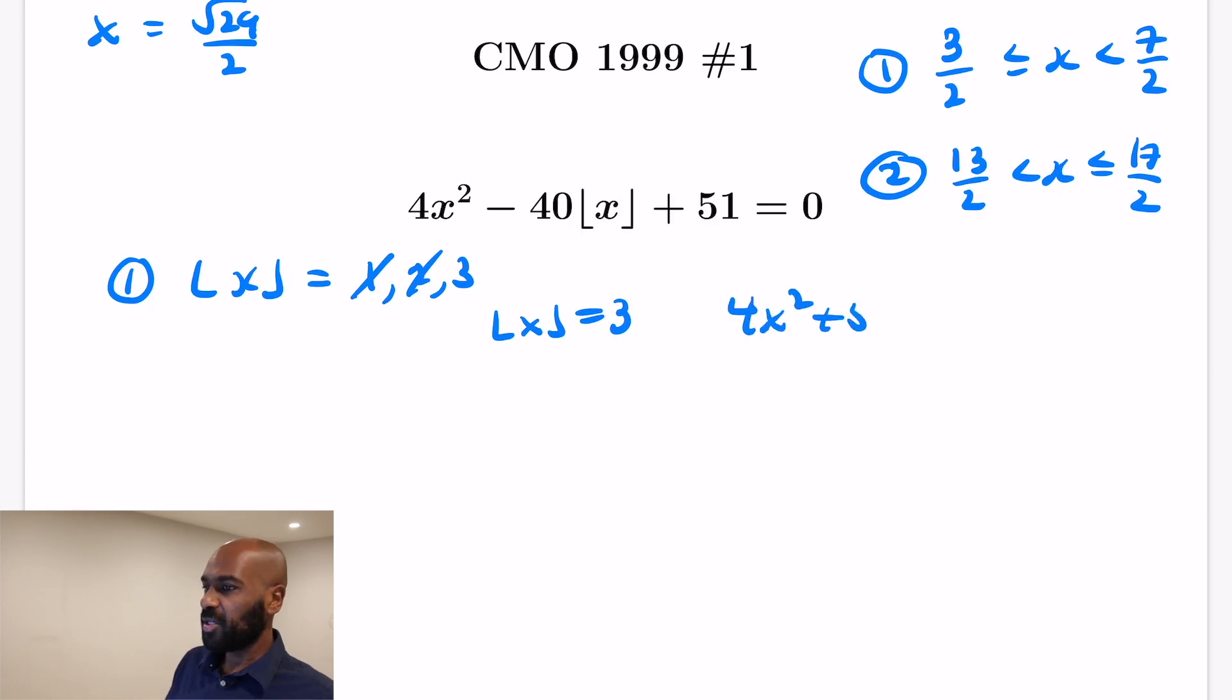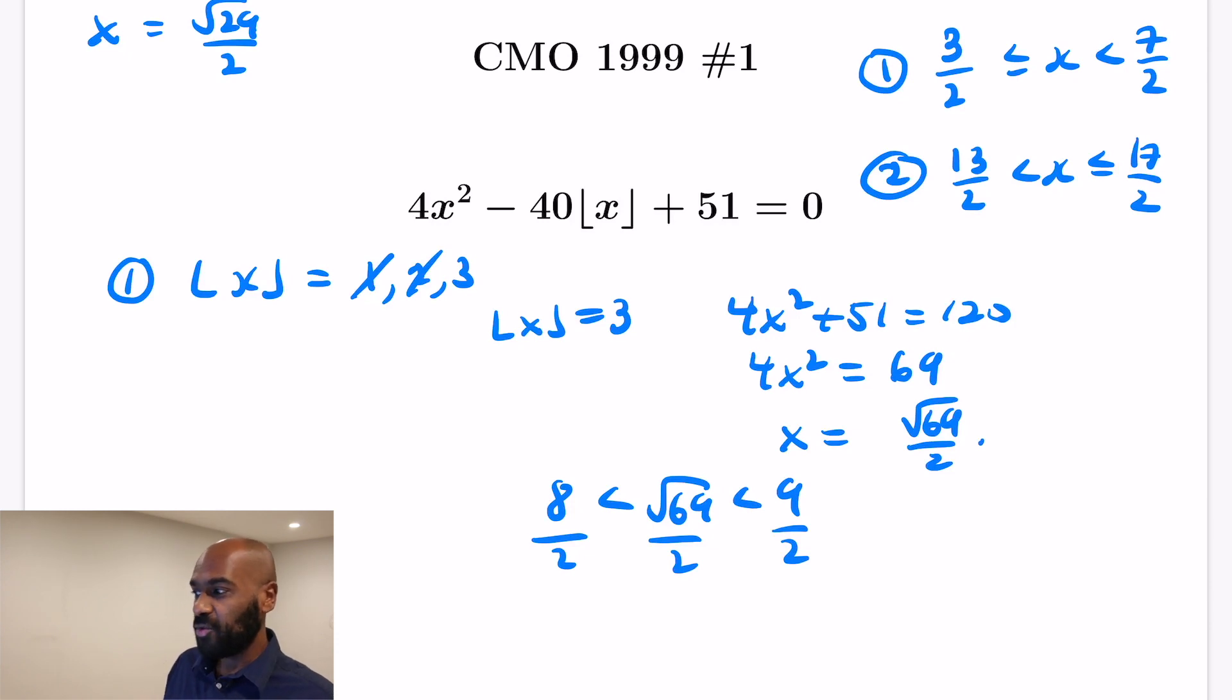Now let's move on to the floor of x is 3. We got 4x² + 51 = 120 in that case. So 4x² is going to be the difference of these two, which works out to 69, which gives us that x is √69/2. So now again, is the floor of √69/2 actually a number whose floor is 3? The square root of 69 is between 8 and 9. So if we divide these by 2, we get that the floor of the value x is actually strictly greater than 4. So the floor of it happens to be 4, which is not the 3 that we assumed when we gave a value for floor x. So that rules that out.